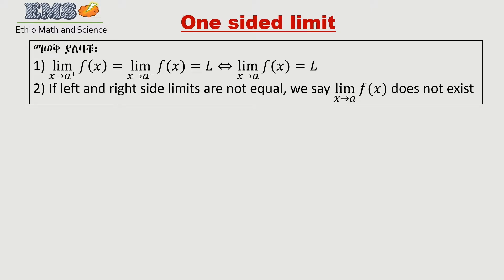The limit of F of x as x goes to A from the right side — that's A plus — is the right-side limit. And the limit of F of x as x goes to A from the left side — that's A minus — is the left-side limit. So you have two limits: from the right side and from the left side.